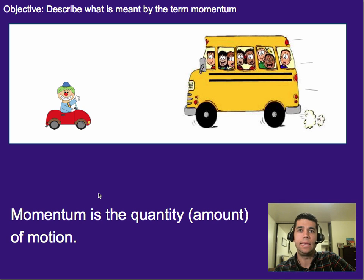Alright, so momentum is the amount or quantity of motion. If we've got a bus here versus a car with just one person in it, we want to describe how much motion each of these things have. It's going to be based on a couple of different things.